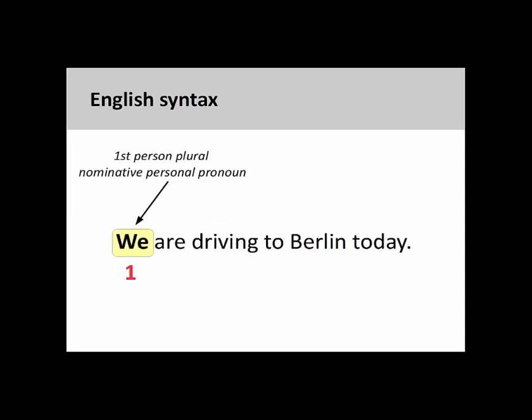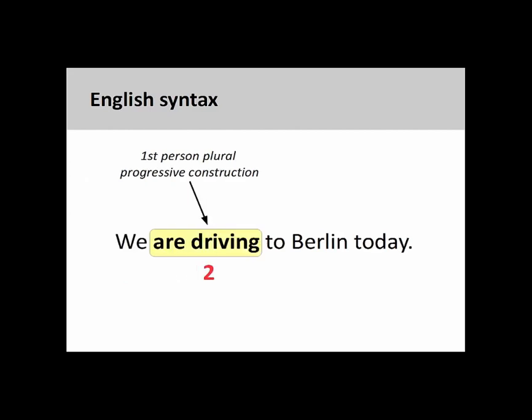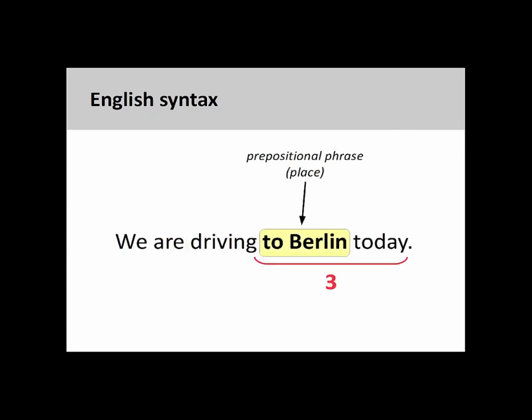In English statements, the subject generally comes in the first position. Here the subject is the first person plural nominative personal pronoun 'we.' The verb — here a first person plural progressive construction — comes in the second position. The progressive construction in English describes an ongoing event and consists of a conjugated form of the verb 'to be' and the present participle of a verb.